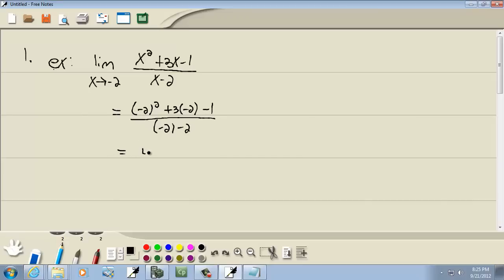Well, negative 2 squared is 4. 3 times negative 2 is negative 6 minus 1. Negative 2 minus 2 is negative 4. 4 minus 6 gives us negative 2, minus 1 gives us negative 3. And negative 3 over negative 4, the negatives cancel, and we got 3 fourths.